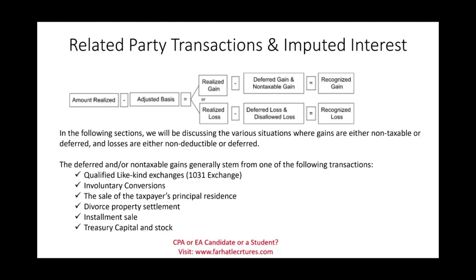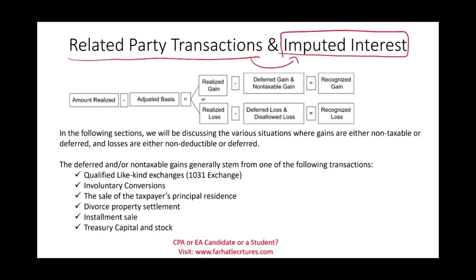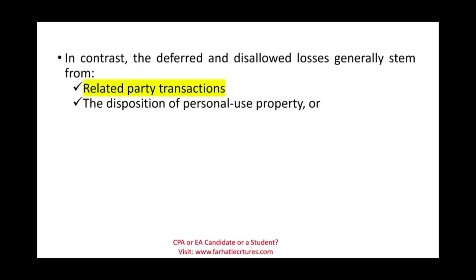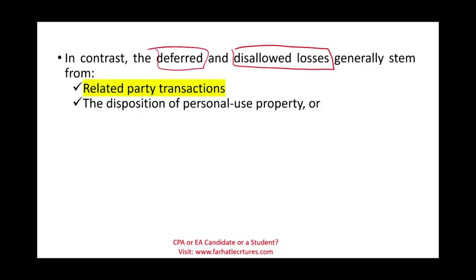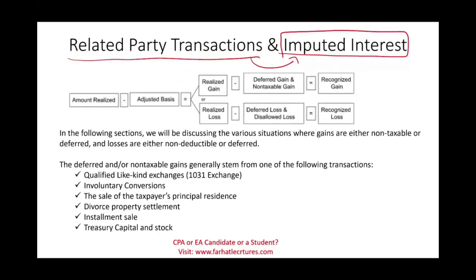Welcome to this session where we will discuss related party transactions and the related topic of imputed interest between related parties. Related party transactions fall under the umbrella of disallowed losses — certain losses that we cannot use. We have certain losses that can be deferred, which we'll talk about later, and we already discussed losses that could be deferred, for example in a qualified 1031 exchange. However, when it comes to related party transactions, the losses are simply not allowed.